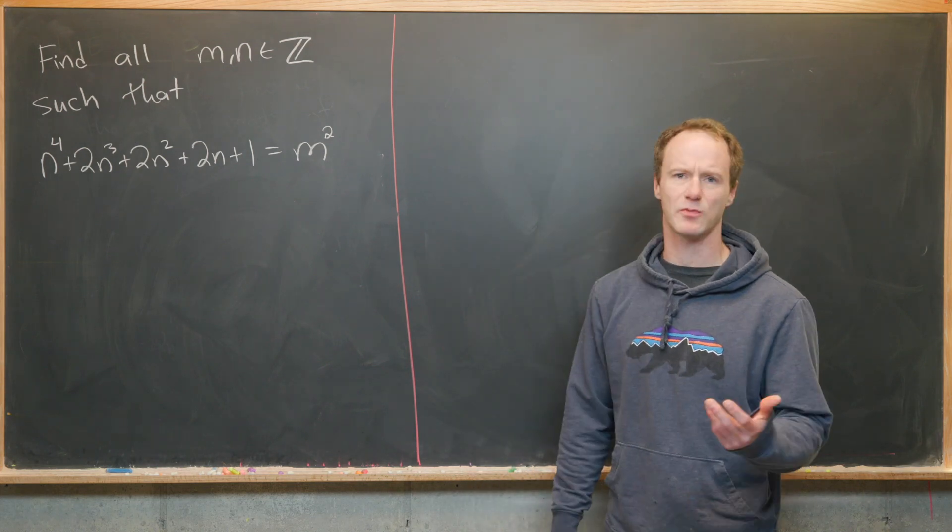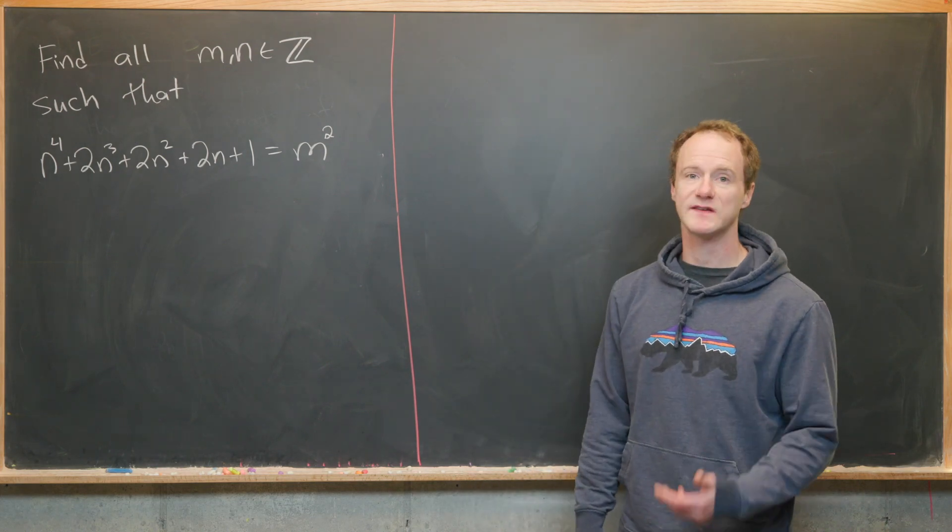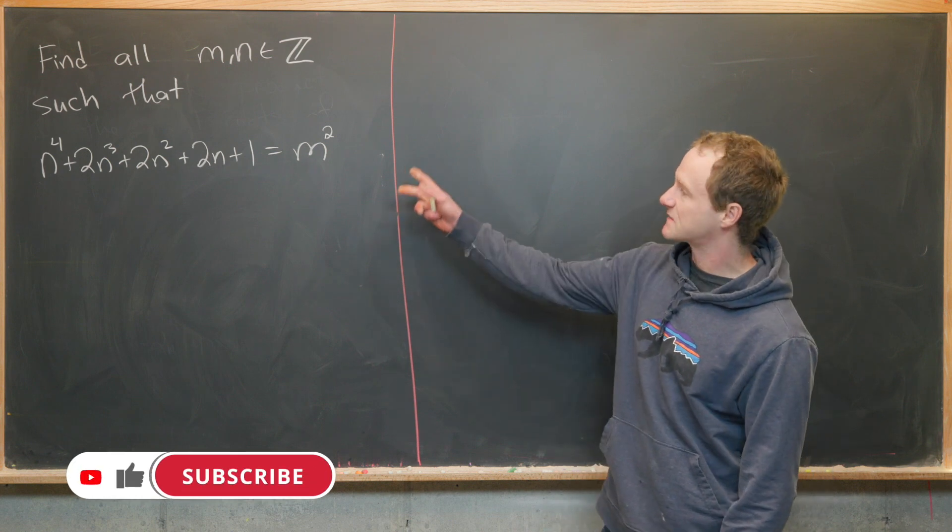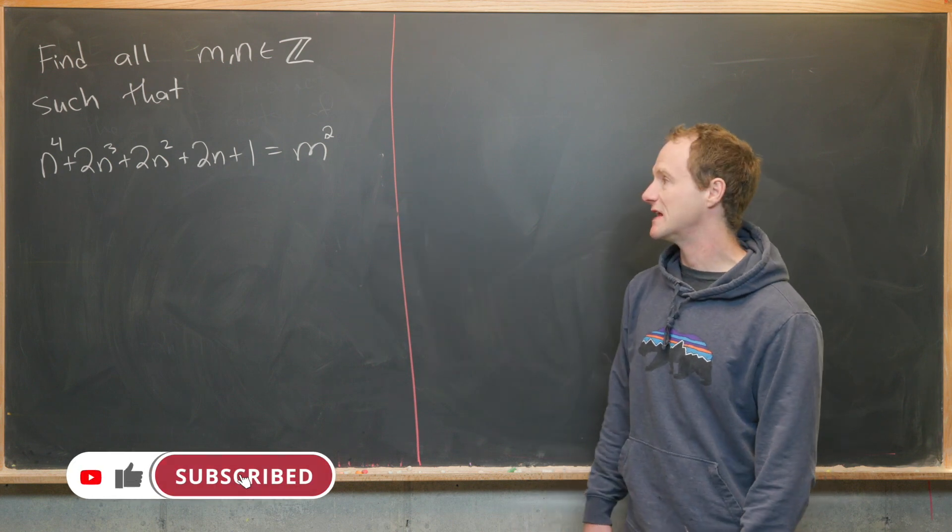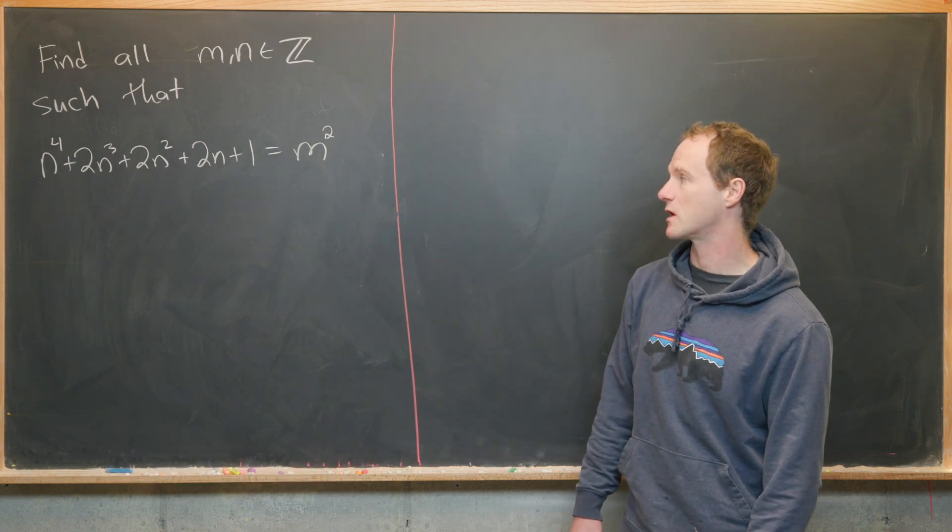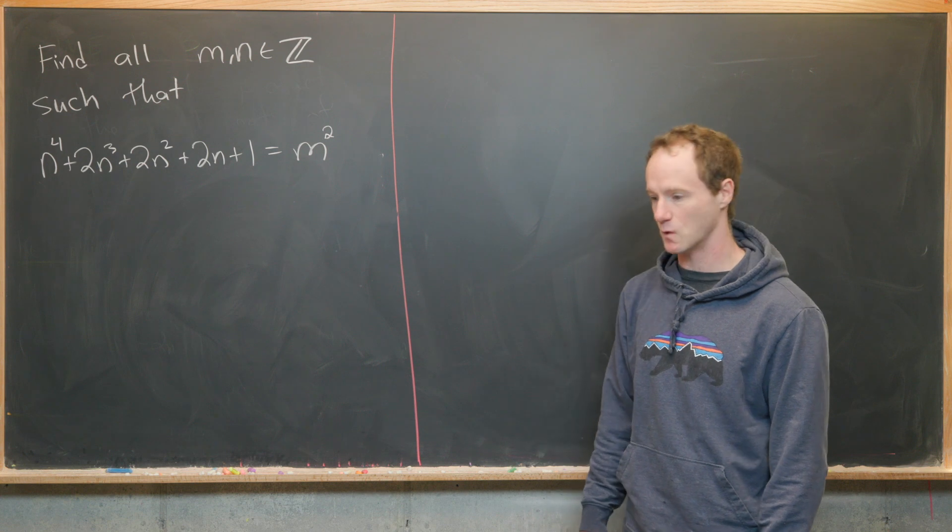Here we're going to look at a nice and quick little problem. Our goal is to find all integers m and n satisfying this equation: n to the fourth plus 2n cubed plus 2n squared plus 2n plus 1 equals m squared.